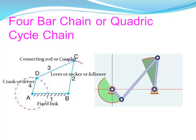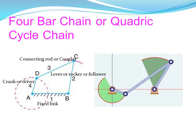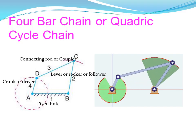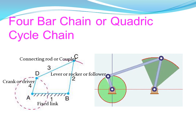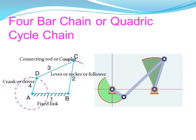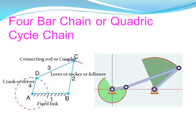In this 4-bar chain, we have a total of 4 links. The first link is link AB — this is the fixed link, also called link number 1. The second is the crank or driver, which is link 4, also called link AD. This link has rotary motion, and it also acts as a rotary motor.